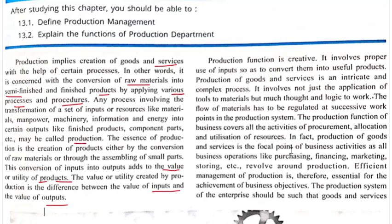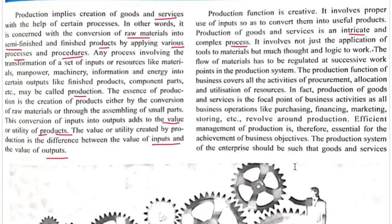The production function involves the proper use of inputs so as to convert them into useful products. Production of goods and services is an intricate and complex process — it involves not just the application of tools to materials, but much thought and logic to work. The flow of material has to be regulated at successive work points in the production system. The production function of the business covers all the activities of procurement, allocation, and utilization of resources.